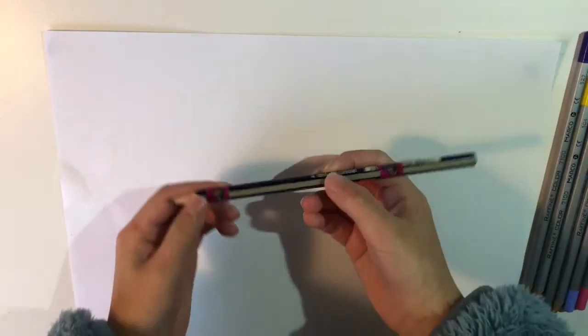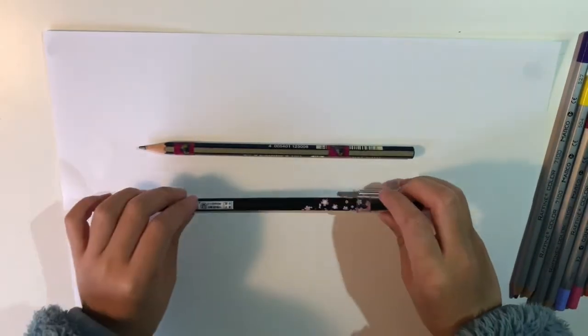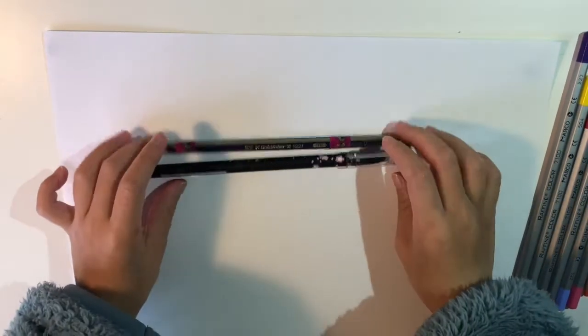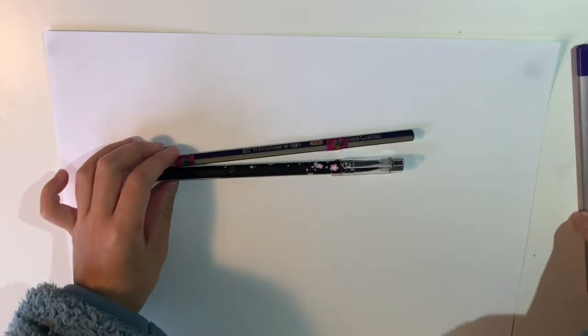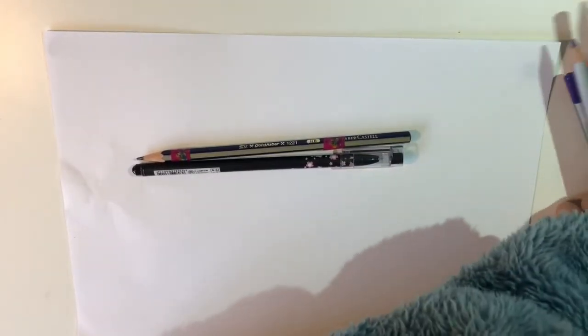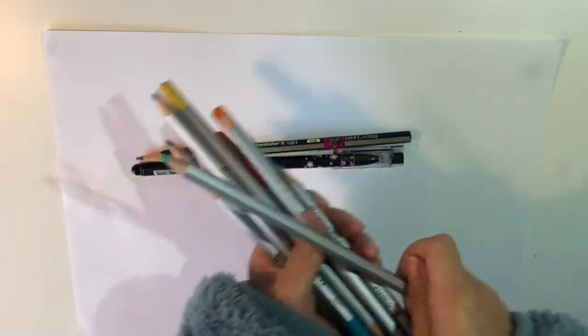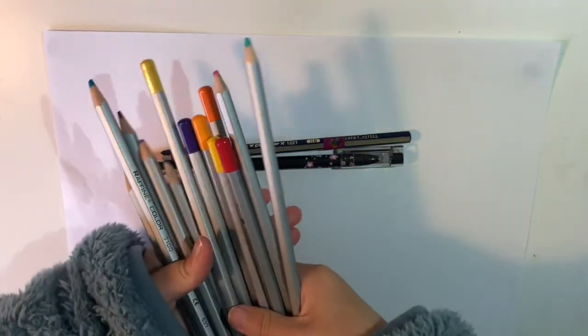As you see, I got a sheet of paper, one pencil, one fine liner or texture back, and lots of coloring pencils because the bird has lots of colors.